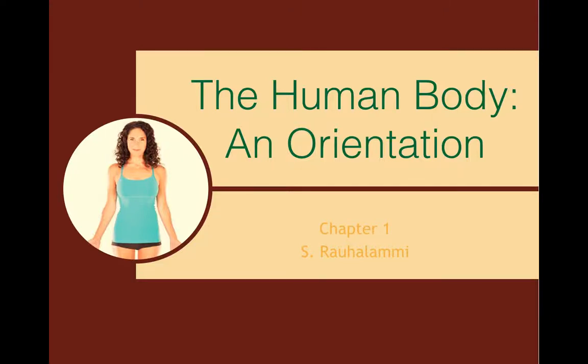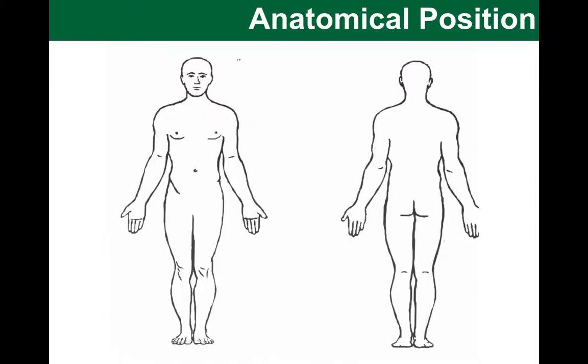In this video, we will be looking at regional and directional terminology, body planes and cavities. But before we move on to these topics, let's look at this concept. Anatomical position shows an individual standing upright, hands on the side with palms facing to the front, feet next to each other, face forward.